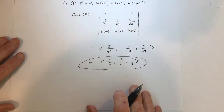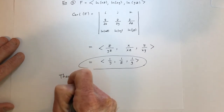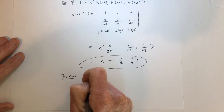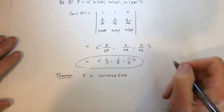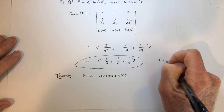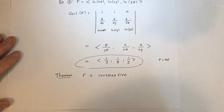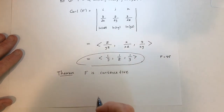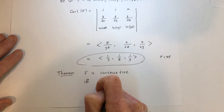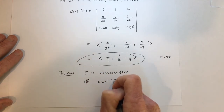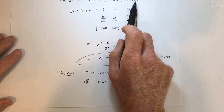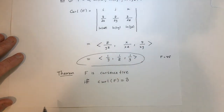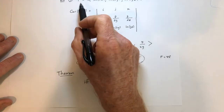Then on to the next part — a theorem. F is conservative. You may remember that F is conservative means it's the gradient of some other function. F is conservative if and only if the curl equals zero. So is this F the gradient of something? The answer is no, because the curl did not equal zero. So this F is not conservative.